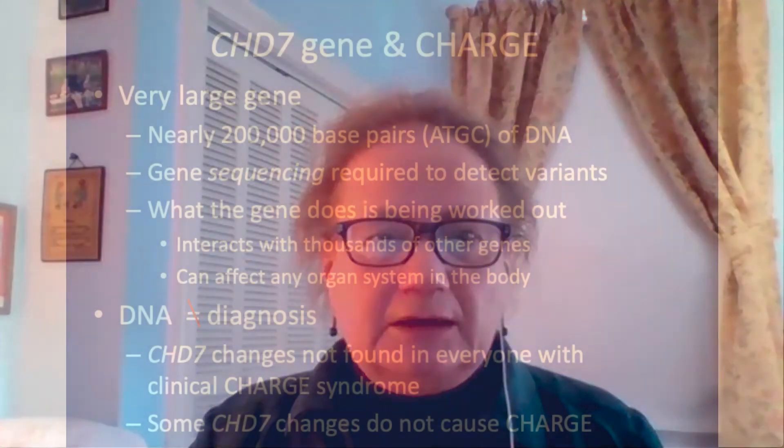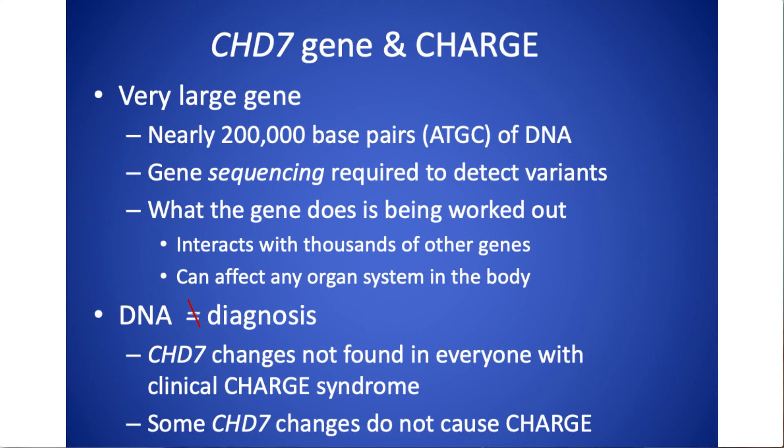CHD7 is a very large gene with nearly 200,000 base pairs — the A, T, G, C that make up the spelling of DNA. What you're looking for is a single typo in that string of 200,000 base pairs, and the only way to find it is by specifically sequencing — reading every single base pair. There are a lot of different kinds of genetic tests: chromosome tests, microarray, and many of those are not going to tell you about CHD7. So if someone has had genetic testing and it was normal, I always have to ask which type of genetic testing they had, because there's no one test that gives you all the information about all different genetic conditions.